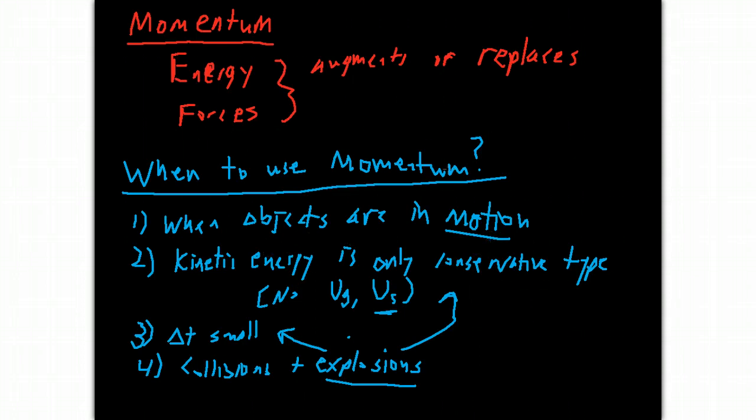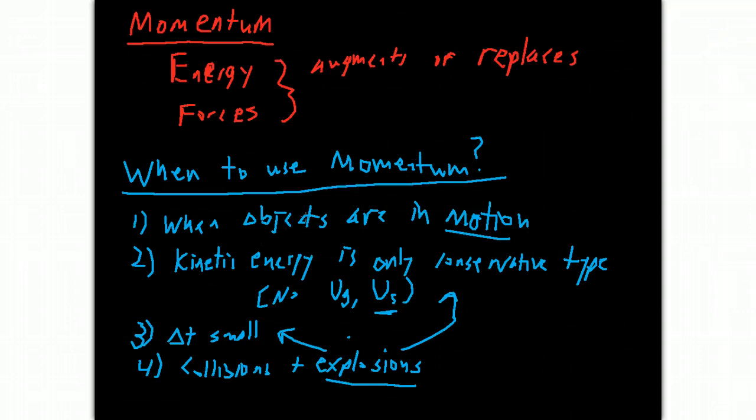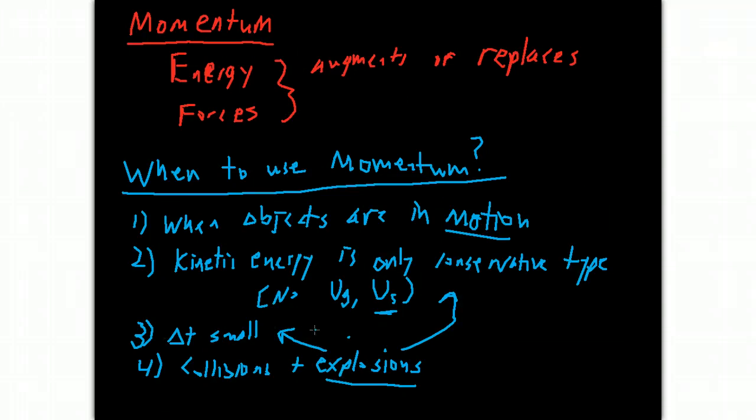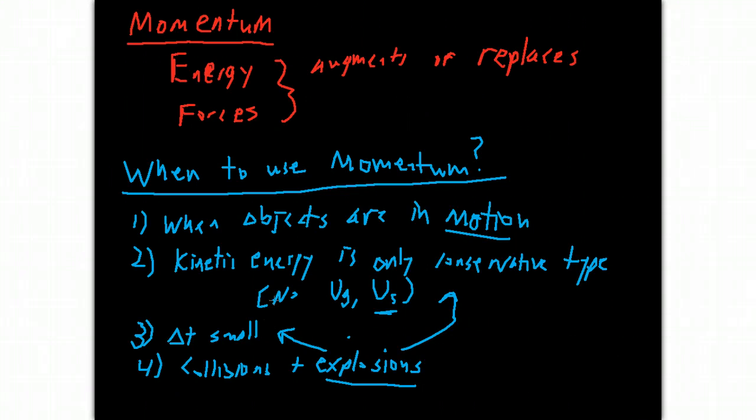So just to do a quick rundown: when objects are in motion, that's kind of an absolute condition you need in order to use momentum. They don't have to always be in motion, but at some point they need to be in motion. When kinetic energy is your primary type of energy involved, when delta T is small, it makes sense to use momentum because it's very difficult to use energy and forces in those types of cases. And when you have collisions or explosions, which kind of by definition are when you have these small changes in time. So those are the main areas where you're going to use momentum.